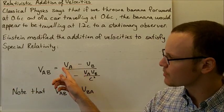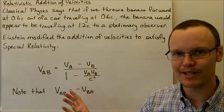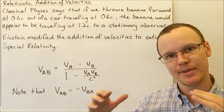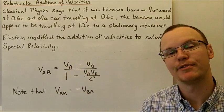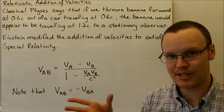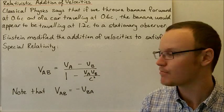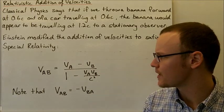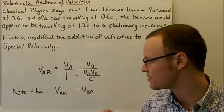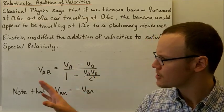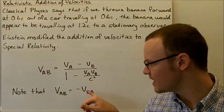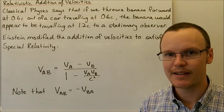In the formula, we have the velocity of A relative to Earth, or relative to a stationary reference frame for both A and B. So the velocity of A relative to the stationary reference frame, plus the velocity of B relative to the stationary reference frame, divided by 1 minus these two velocities multiplied together divided by c squared. Note that the velocity of A relative to B is equal to the negative of the velocity of B relative to A.